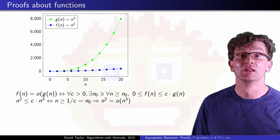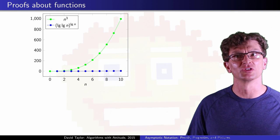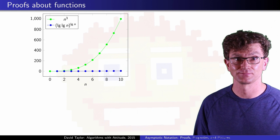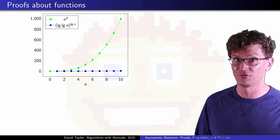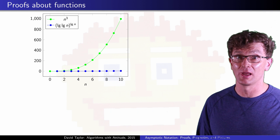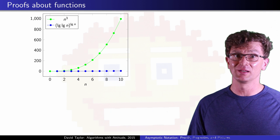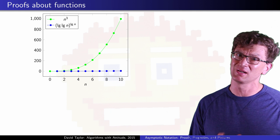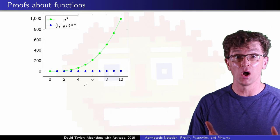But what happens if we take functions n cubed versus log log n to the log n? The base, log log n function, grows doubly exponentially slow, but the exponent, log n, grows large, but not too quickly.